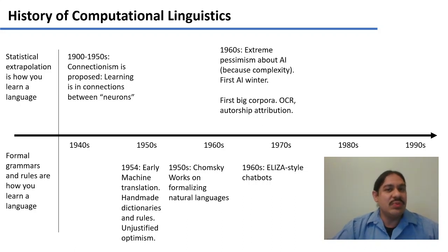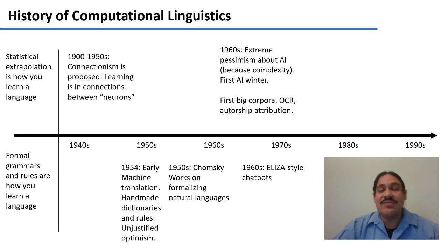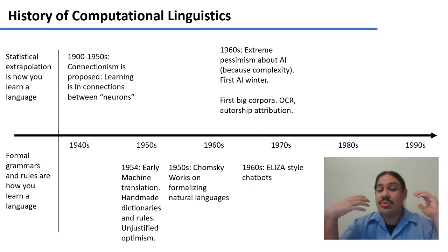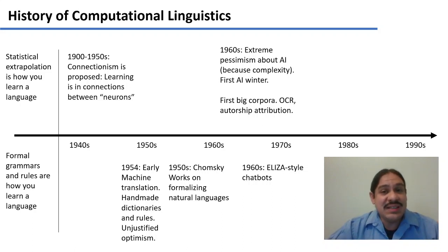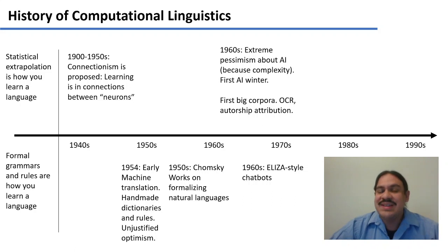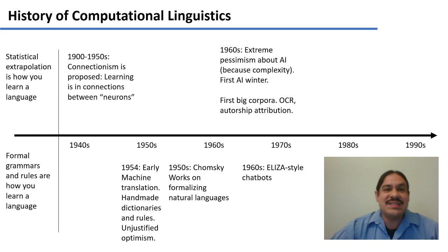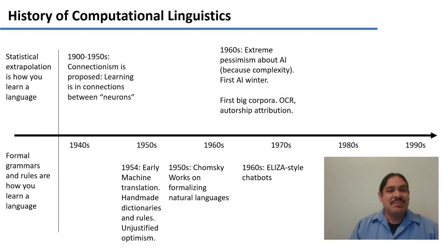Throughout the late 50s and 60s there was research on neural networks, but unfortunately these neural networks were fairly limited. They did not have hidden layers, they only had very few input neurons, and so they could not succeed in the way their creators had foreseen. This led to pessimism about artificial intelligence and to a period called the first artificial intelligence winter in the late 60s and 70s. Despite these problems, progress was being made on accumulating data, for example.